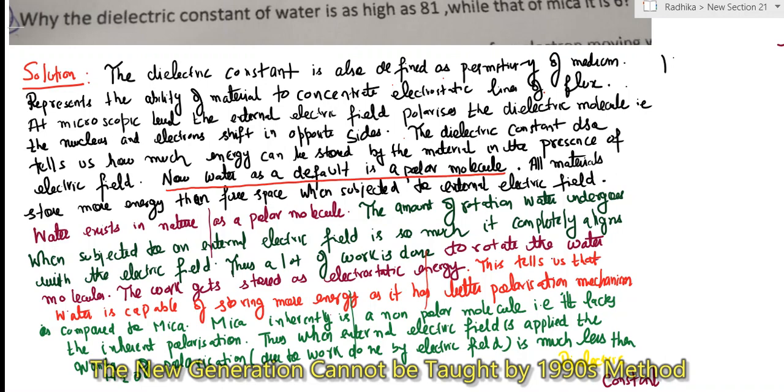So you can read the answer. If a molecule inherently has more polarization mechanism, the dielectric constant of those materials is very high.